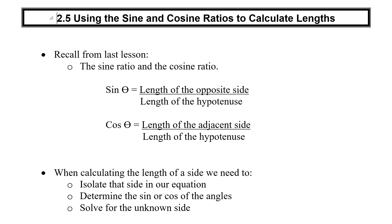Here we are with lesson 2.5, which builds off 2.4, the introduction of the sine and cosine ratios. In the last class we looked at calculating the angles, and now we're going to look at calculating the lengths. We want to recall from the last class exactly what the sine ratio and the cosine ratio are. Sine of the angle is the opposite over hypotenuse, and cos of the angle is adjacent over hypotenuse.